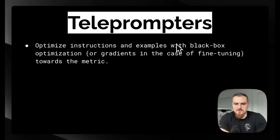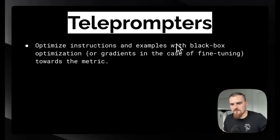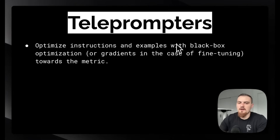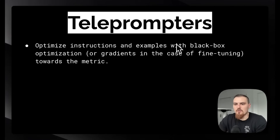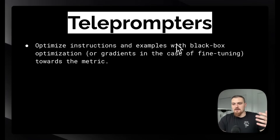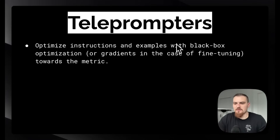Now we have teleprompters. Teleprompters describe the optimization loop where we're exploring different instruction writings and different examples in the prompt with ascent towards the metric. That could be black-box optimization where you do random searching, Bayesian optimization, or evolutionary search towards the metric. Or if you're fine-tuning, you can directly optimize for the metric. Teleprompters are the system that orchestrates proposing candidate examples for the LLM components as well as new signatures, and seeing if that's improving the metric.